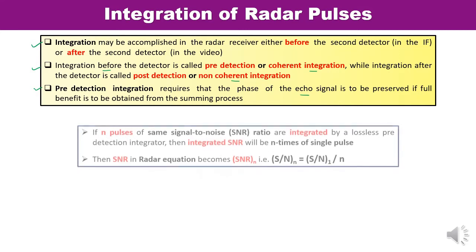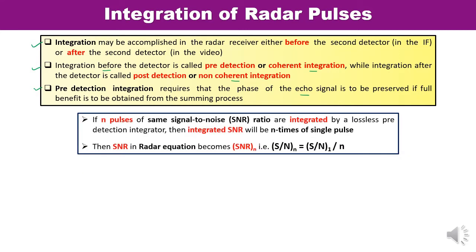For a pre-detection integrator, if N pulses all have the same signal-to-noise ratio and are integrated by a lossless pre-detection integrator — before the second detector — then the integrated SNR will be N times the signal-to-noise ratio of a single pulse. When writing the radar equation using SNR, the signal-to-noise ratio term becomes SNR_N (subscript N denoting all N pulses), so S/N for N pulses equals 1/N times the single-pulse SNR.